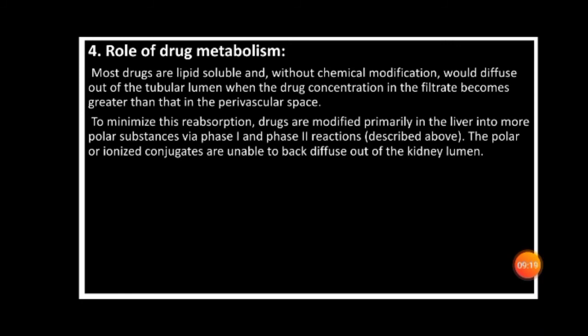Most drugs are lipid-soluble and without chemical modification would diffuse out back into the blood when drug concentration in the tubule becomes greater than in the perivascular space. To minimize this reabsorption, the drug is modified primarily in the liver into more polar substances via phase 1 and phase 2 reactions. When the drug undergoes hepatic phase 2 metabolism, it is converted into a polar group that is more readily excreted.